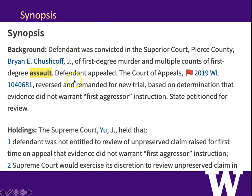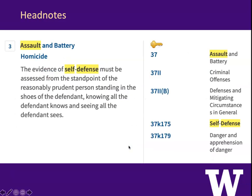The synopsis is the section at the front of the case where the West editors summarize the case — they give the background and the holdings. The digest field is the head notes, the one-sentence summaries of points of law tied into the West topics and key numbers. We'll talk about these in another lesson, but for now notice that this helps make sure that our terms are in an important part of the case where the editors have determined this is what the case is about.